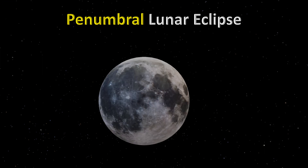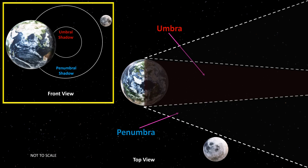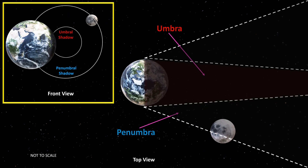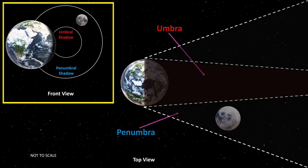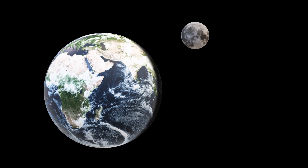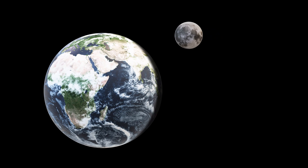The last type is a penumbral lunar eclipse. It occurs when the Moon passes through the Earth's penumbral shadow. This event is so subtle that it is hard to notice — the Moon will appear just slightly darker than normal.